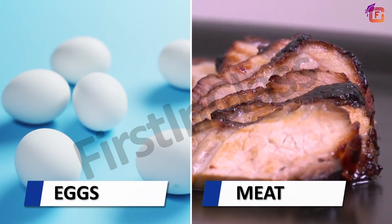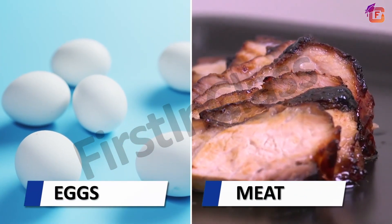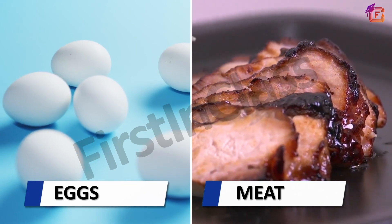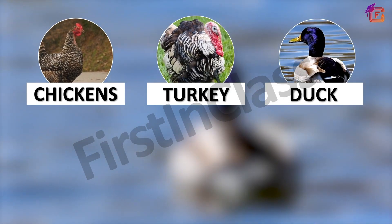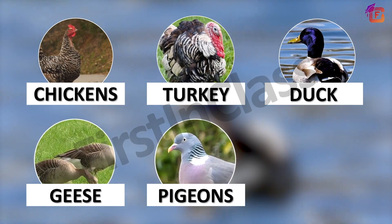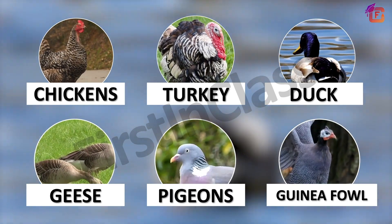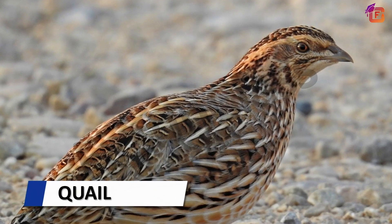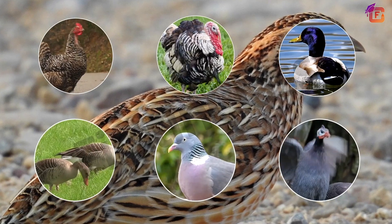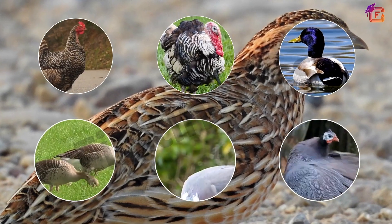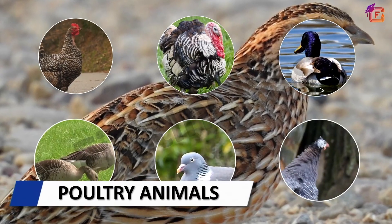Look at the examples of eggs and meat. Birds like chickens, turkeys, ducks, geese, pigeons, guinea fowl and quail provide us with these products. Such animals are called poultry animals. We have various options from animal products, isn't it?